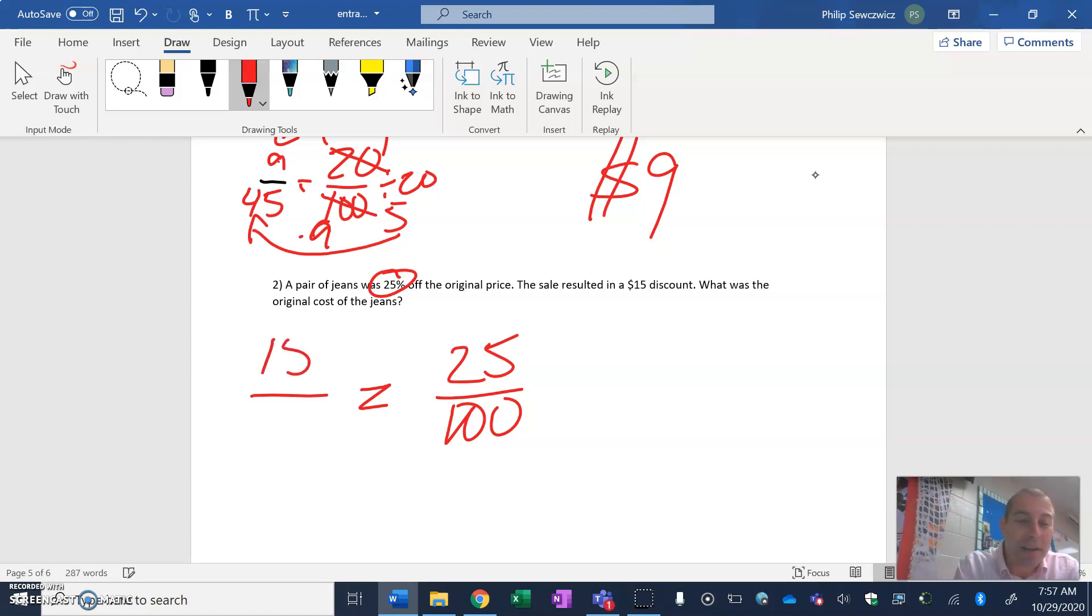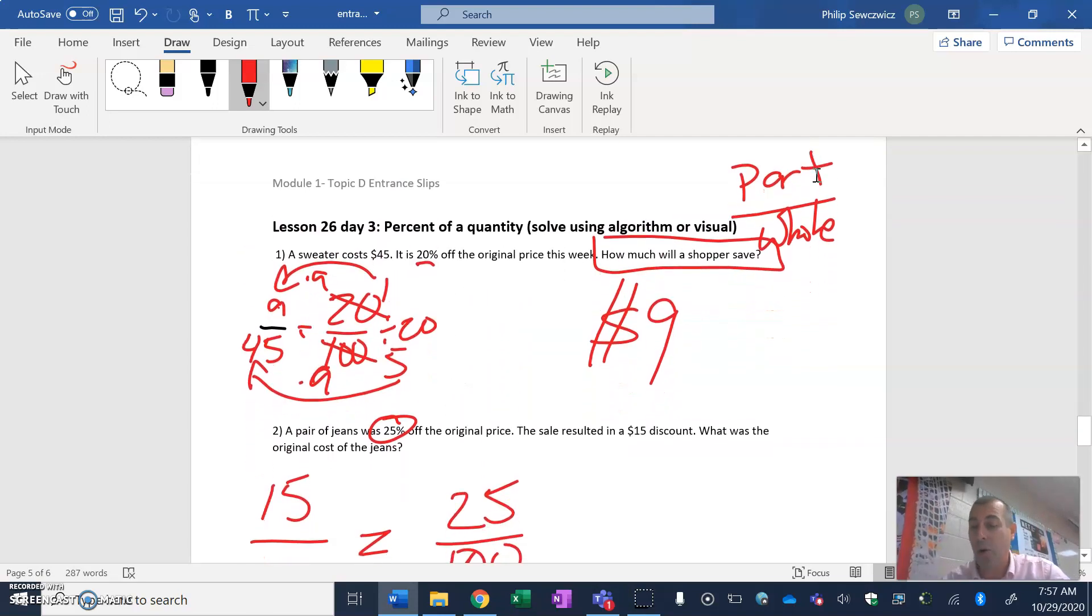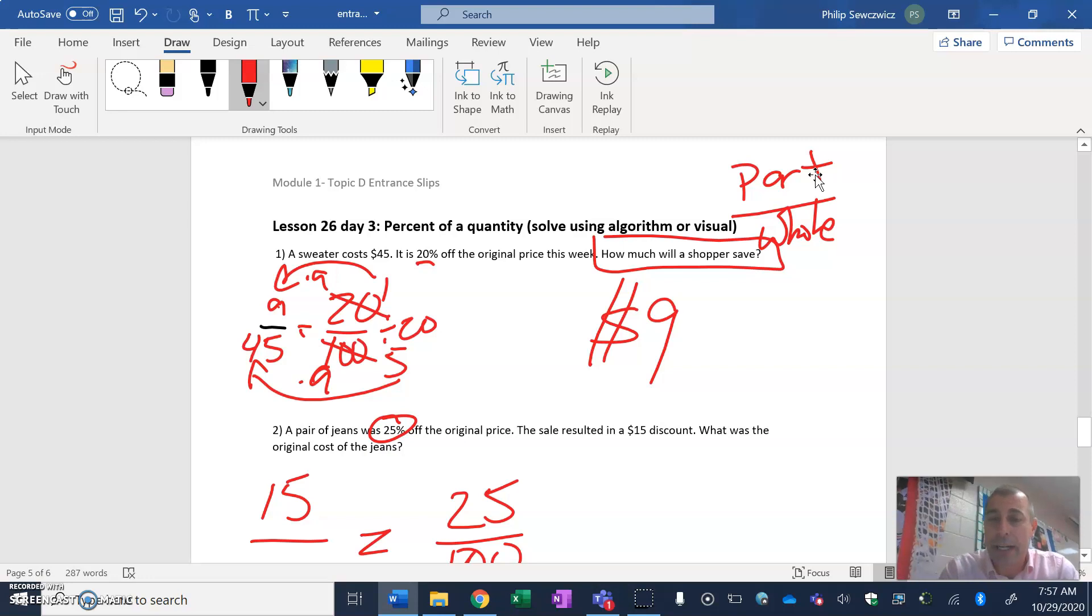Because that's the part we get to take off, there's a theme that you're going to see here. Remember we talked about part and whole. Well, what we're going to see here is that part is always the discount, and the whole will always be the original price. So it is a theme that you'll always see. The original price, the actual price, the whole price. Get it? Whole.